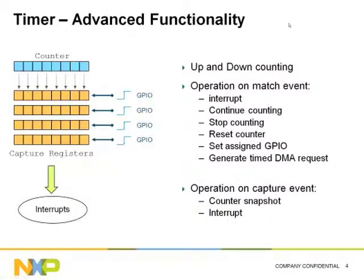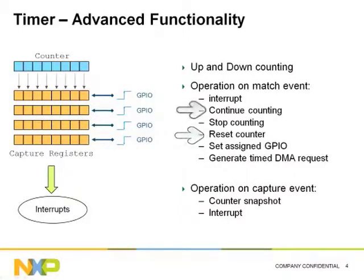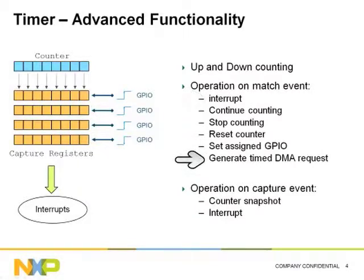Here we see some advanced functionality of the timer. The counter, for example, can be up or down counting. When a match event happens, the timer can stop counting, reset, continue counting, set or clear an assigned output pin, generate interrupts, or generate a DMA request. When the timer is configured to capture a value, it can also generate an interrupt or capture the value of the counter within a dedicated register.